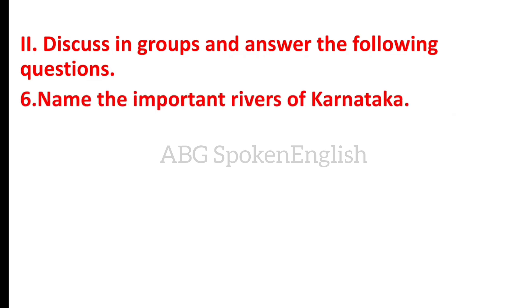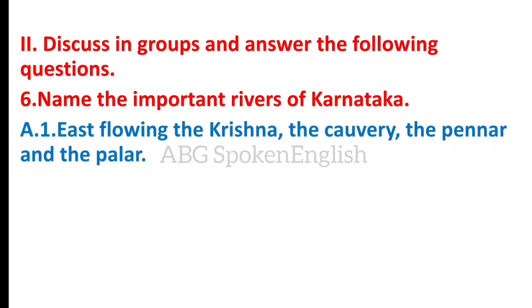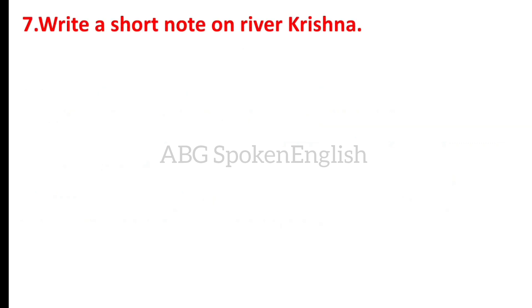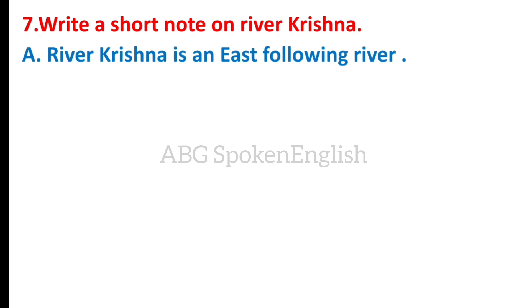Name the important rivers of Karnataka. East flowing rivers: Krishna, Kaveri, Penar, and Palar. West flowing rivers: Sharawati, Kali Ganga, Vali, Nitravati, Varahi, Aganashini, etc. Write a short note on river Krishna.